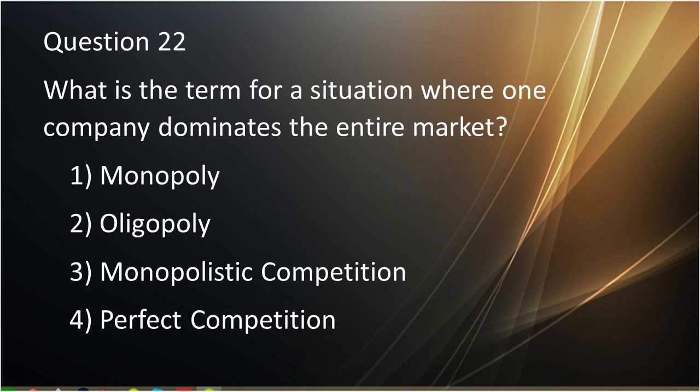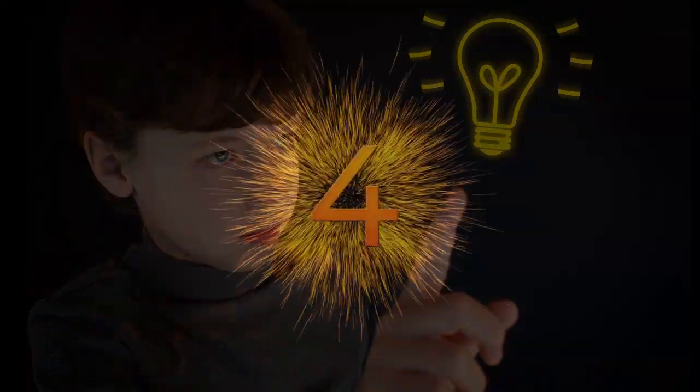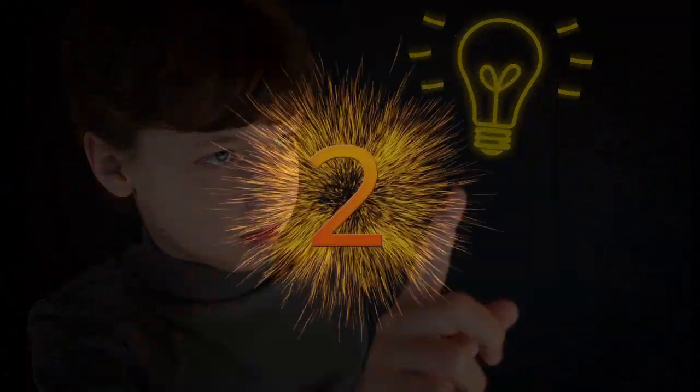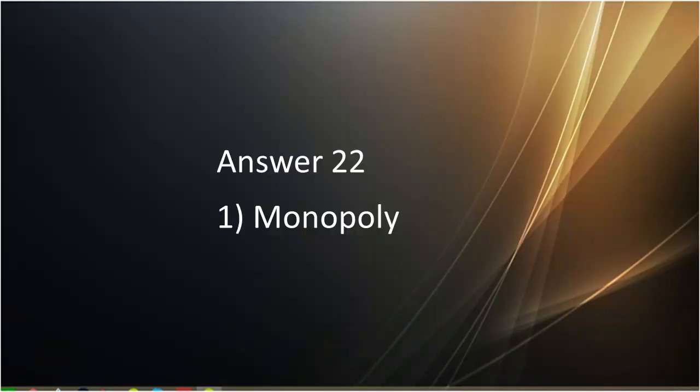Question number twenty-two: What is the term for a situation where one company dominates the entire market? First is monopoly. Second is oligopoly. Third is monopolistic competition. Fourth is perfect competition. Answer to question number twenty-two is monopoly.